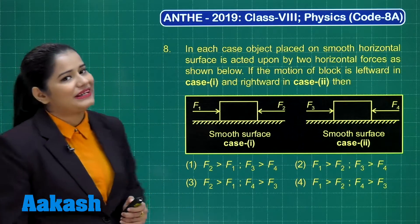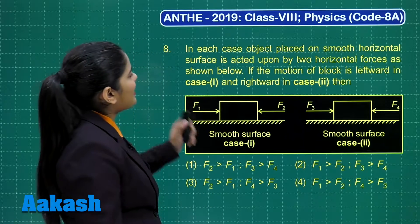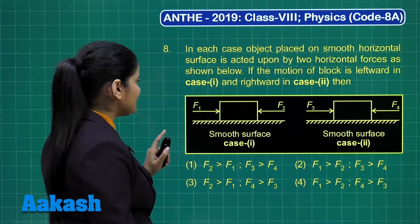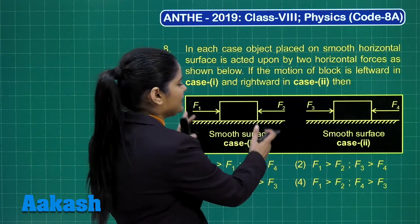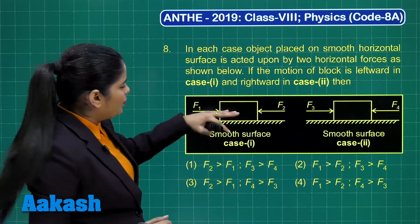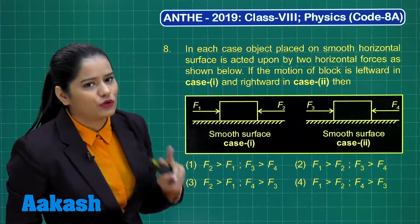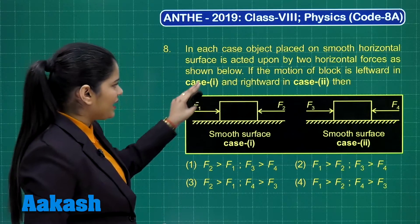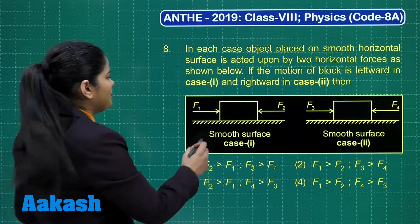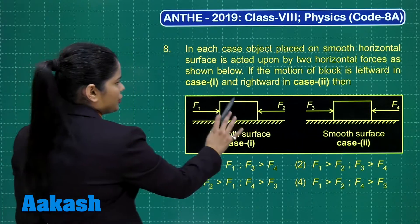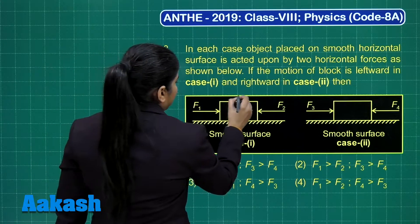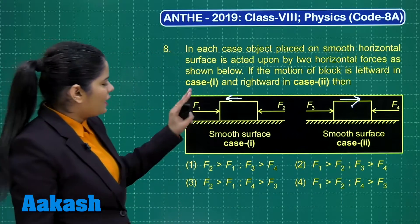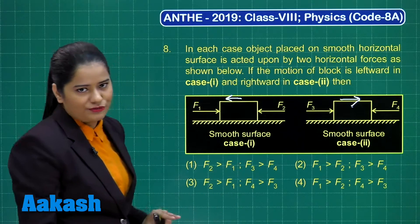Question number 8 says: in each case, an object placed on a smooth horizontal surface is acted upon by two horizontal forces as shown. We are given two figures — case 1 and case 2. Both blocks are acted upon by two forces. The motion of the block is leftward in case 1 and rightward in case 2.